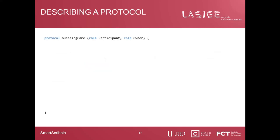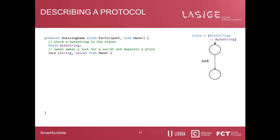We will now describe the guessing game protocol using SmartScribble. We start with the header, where we define the name of the protocol and the roles in action — in this case, as we saw previously, the owner and the participant. We want to store the secret somewhere, which will be on the state machine. To do that, we use the declaration of fieldBytesString, which will allocate some space in memory so we can use objects of type ByteString to store the secrets. Then we start by declaring the endpoints — the interactions. First, we have a log from the owner, which will generate a new transition in the state machine.